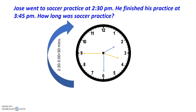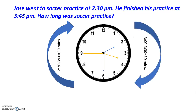2:30 to 3:00 is 30 minutes. 3:00 to 3:30 is another 30 minutes. Now I will label the clock in increments of 15 minutes, since the end time was 3:45.